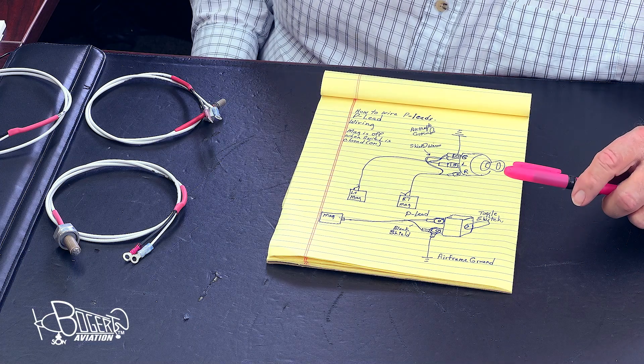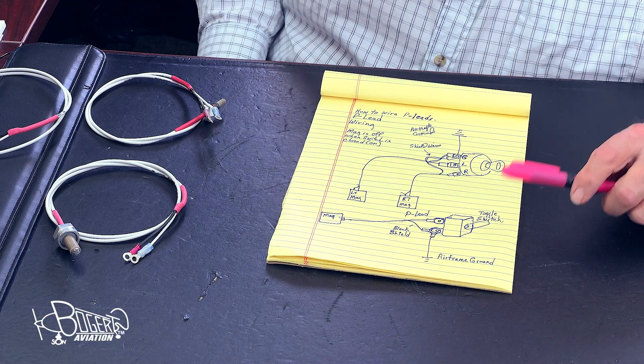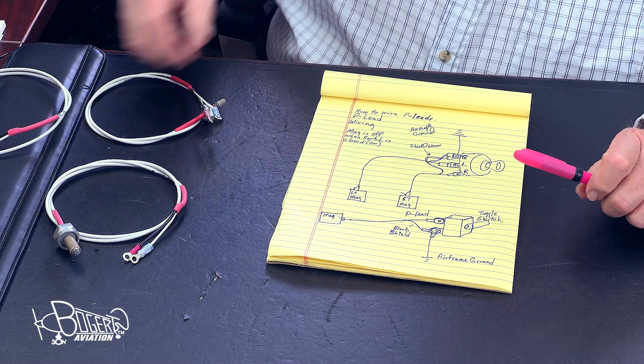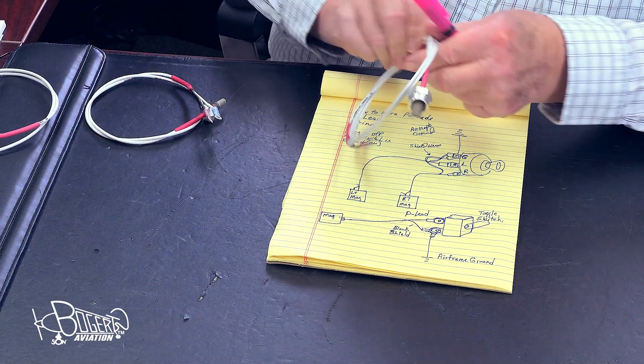So getting down to it, how do we connect the P-leads to the engine or to the magneto and the switch? At the magneto end, it's pretty simple.